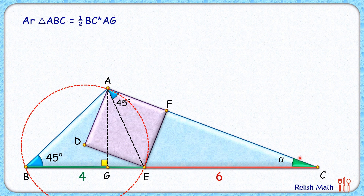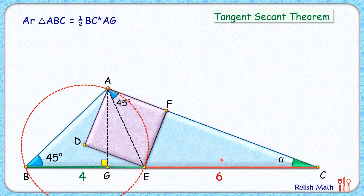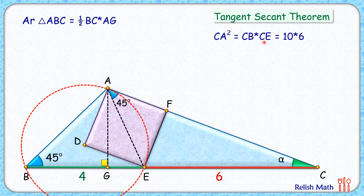So we can say that AC is tangent to this circle. Here CA is the tangent and CB is a secant, so applying the tangent-secant theorem we get CA² = CB × CE. CB is 10 centimeters and CE is 6 centimeters, so CA² = 60 cm². We'll use this result later.